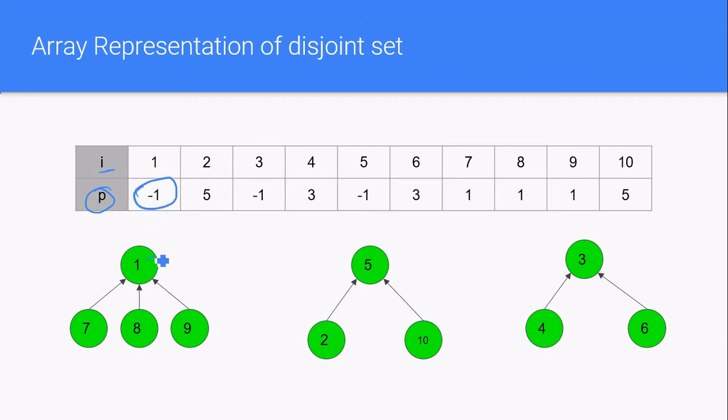So here you can see one is the root node. So we give one its parent as minus 1. And node 2 is in this set and its parent is 5, so we represent it like this. And node 3 is a root node of this set, so we give its parent as minus 1. And node 4's parent is node 3, so it will be represented here.